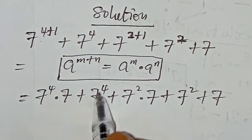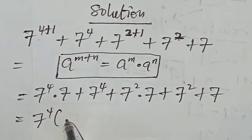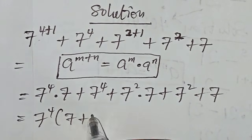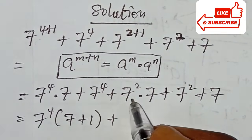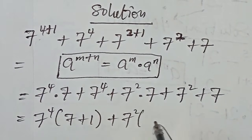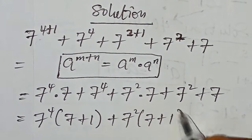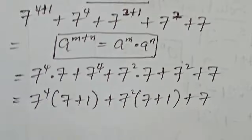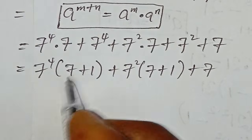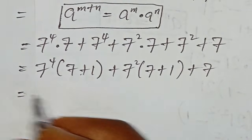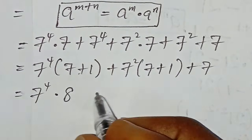Now we factor. We factor out seven to the power of four, opening the brackets to get seven plus one, then close the brackets. Similarly, we factor out seven to the power of two, opening the brackets to get seven plus one, then plus seven. This gives us seven to the power of four multiplied by eight, plus seven to the power of two multiplied by eight, plus seven.